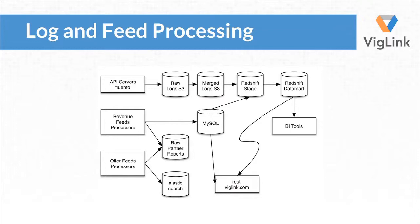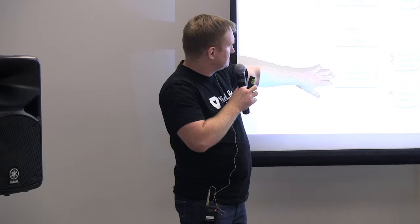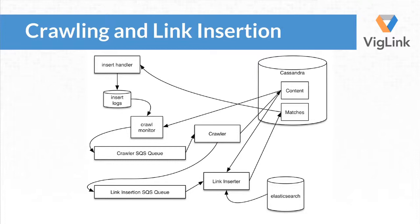Our API produces raw logs which get merged and flow into Redshift. The revenue feed processors are an important part of the business. From a large set of merchants or merchant aggregators, we get offer feeds, and we put those in Elasticsearch. That's an important part of the link insertion pipeline.